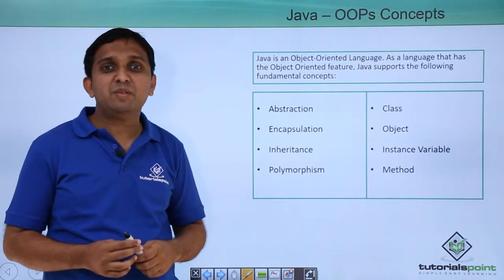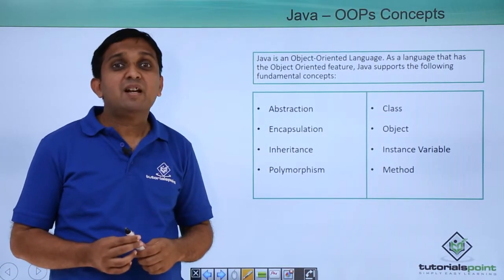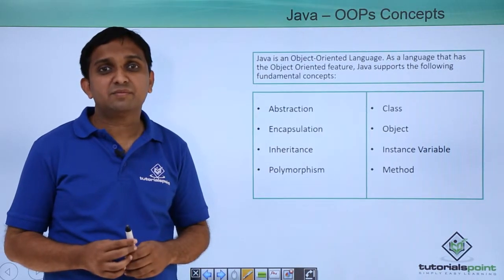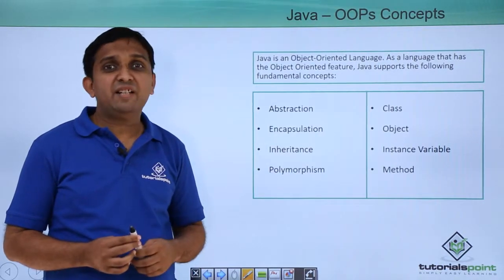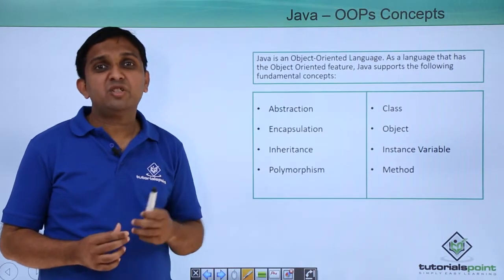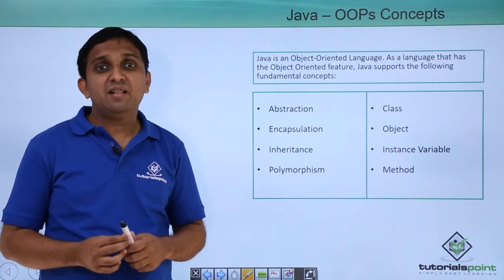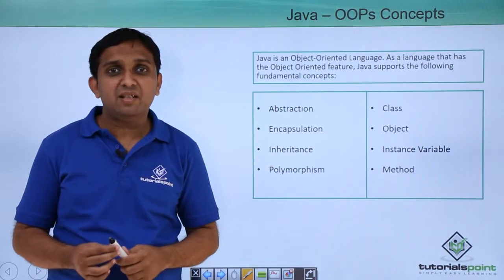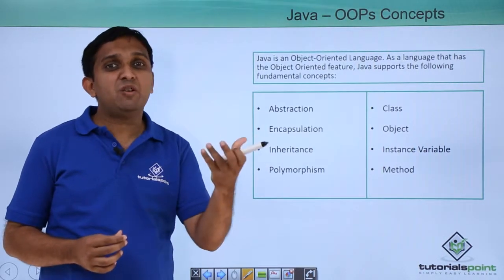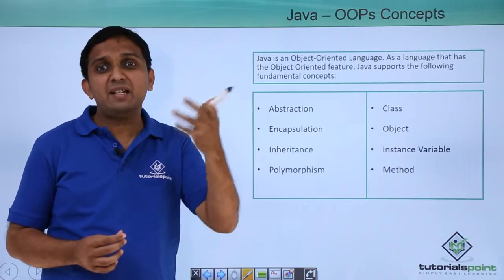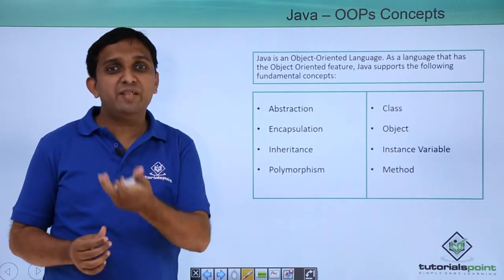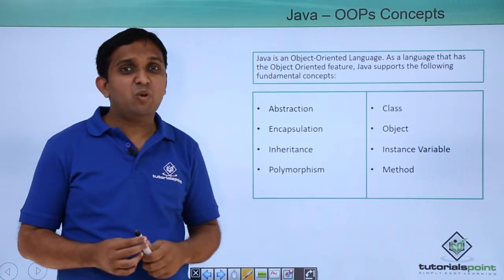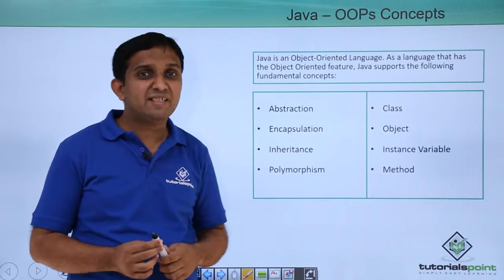Polymorphism is the last major pillar. Polymorphism refers to different responses for the same command. For example, if I say 'switch on', it depends on the object how it will respond. If a tube light is the object, it will get illuminated by the switch on command. If a fan is the object, it will rotate by the switch on command. That is called Polymorphism — different response to the same command.